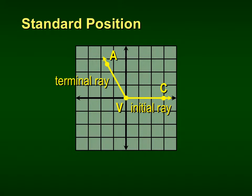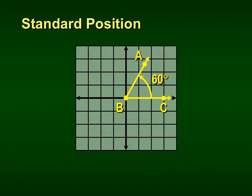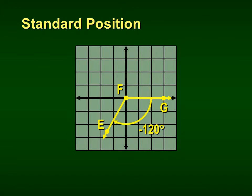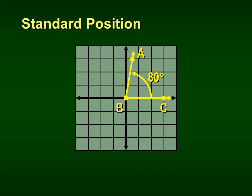Here's a standard position angle of 60 degrees, going counterclockwise. When we go clockwise, we go negative — so in this case we have negative 120 degrees. Here's a positive 80 degrees.